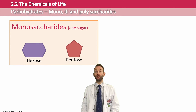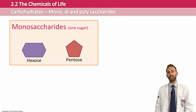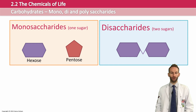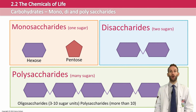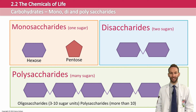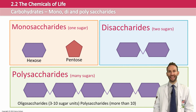If you join two monosaccharides together, you can make a disaccharide, which is two sugar molecules. If you join lots of sugar molecules together, you can make polysaccharides. Oligosaccharides are carbohydrates that are between three and ten sugar units long, and polysaccharides technically are more than ten.